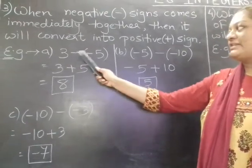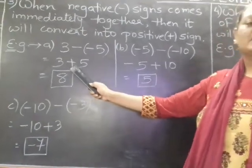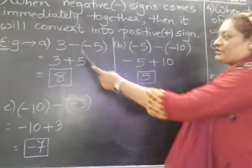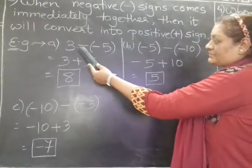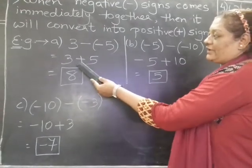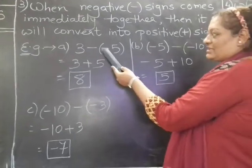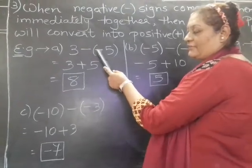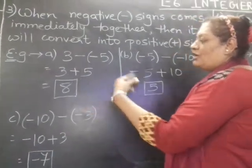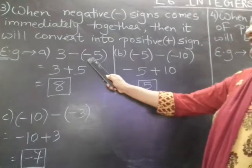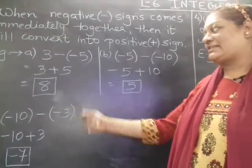So this is the rule: when these two signs come immediately together, they will convert into a plus sign — a positive sign. So 3 is already a positive number. Minus and minus come together, so it converts into plus. This means minus 5 will get converted into plus 5. Now 3 plus 5 — the answer is 8.